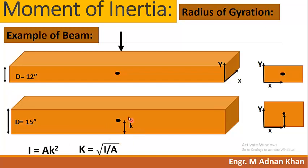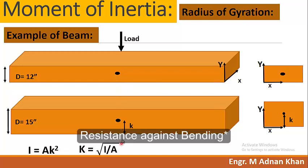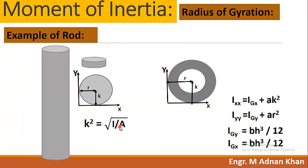These two beams behave differently. The load from the slab to the beam tends to buckle or break the beam downward. By increasing the depth of the beam, the radius of gyration increases, so the deeper beam will bear more load compared to the shallower beam because its resistance against buckling has increased.